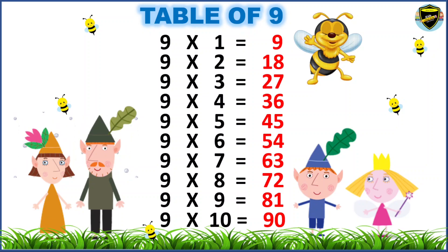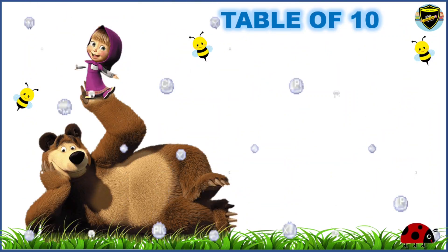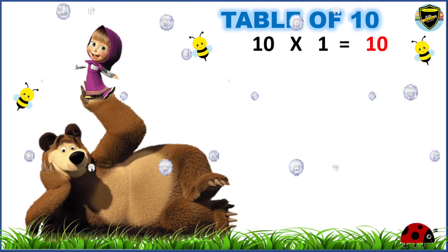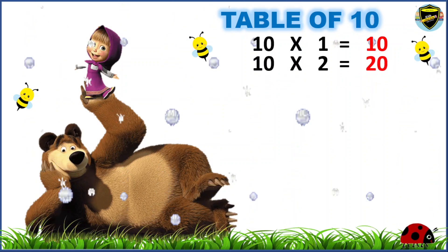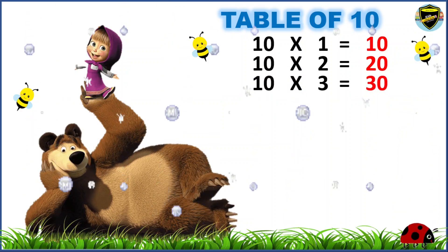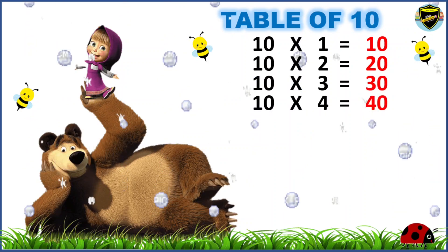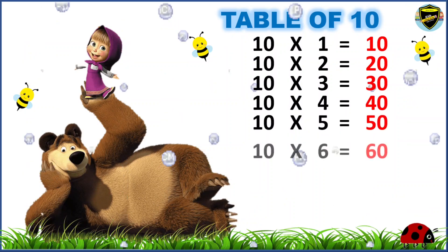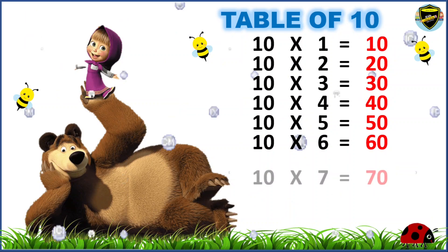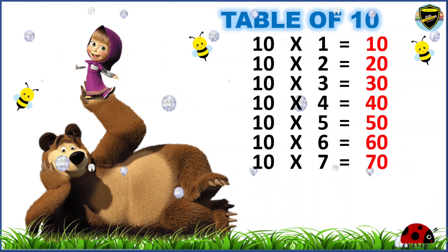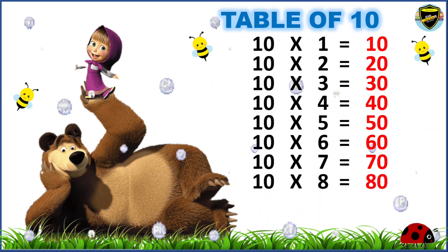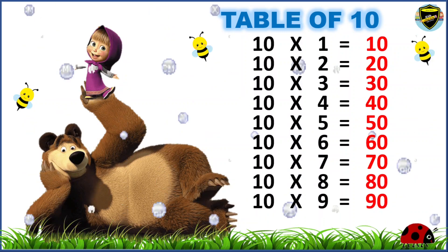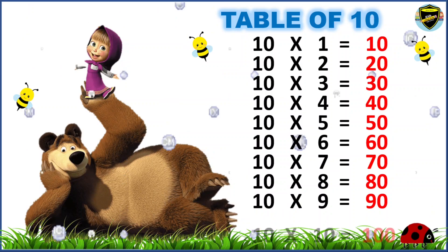Excellent! Now, let's learn the table of 10. 10 1s are 10. 10 2s are 20. 10 3s are 30. 10 4s are 40. 10 5s are 50. 10 6s are 60. 10 7s are 70. 10 8s are 80. 10 9s are 90. 10 10s are 100.